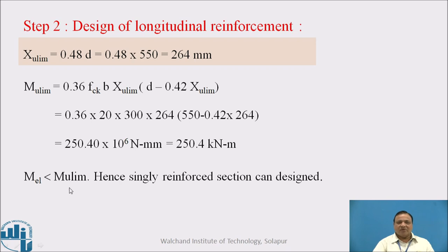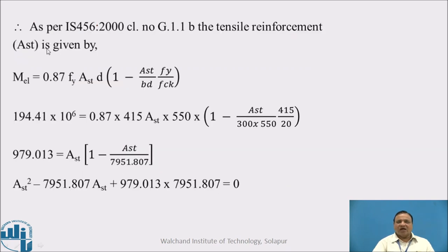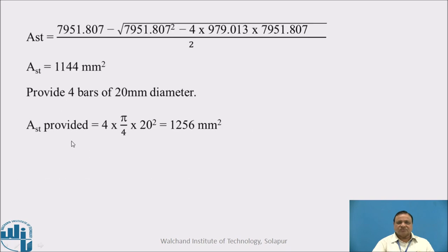As per IS 456-2000 clause G-1.1(b), the tensile reinforcement AST is given by: MEL equals 0.87 × Fy × AST × d × (1 minus AST × Fy / (b × d × fck)). Substituting the values gives a quadratic equation. Solving it, AST is 1144 mm². Provide 4 bars of 20 mm diameter. AST provided is 1256 mm², which is greater than 1144 mm².